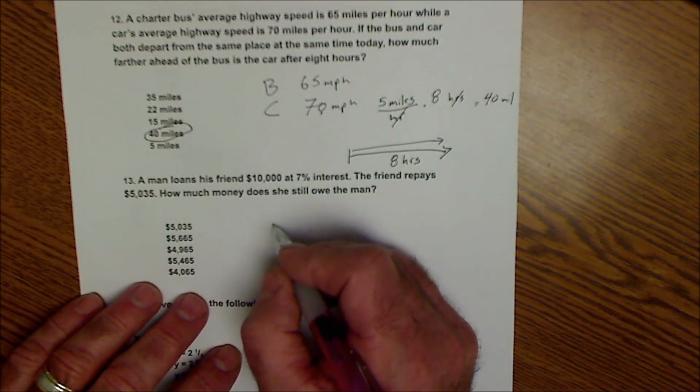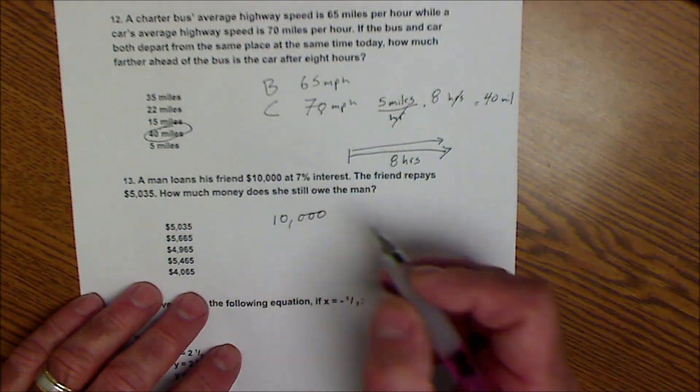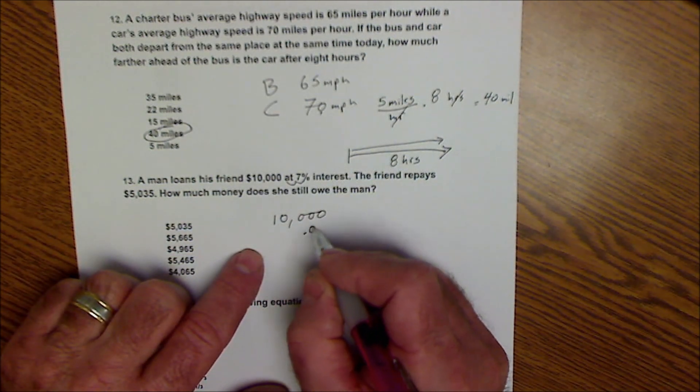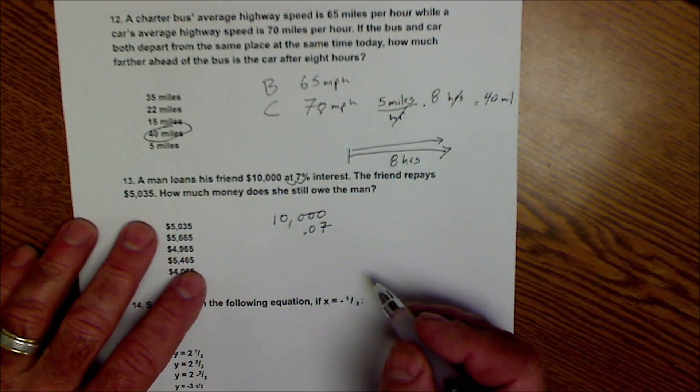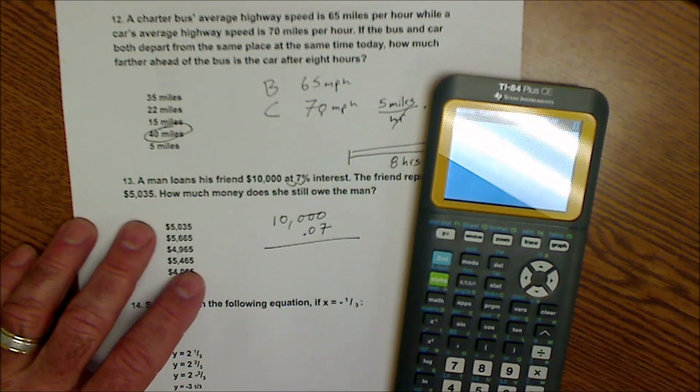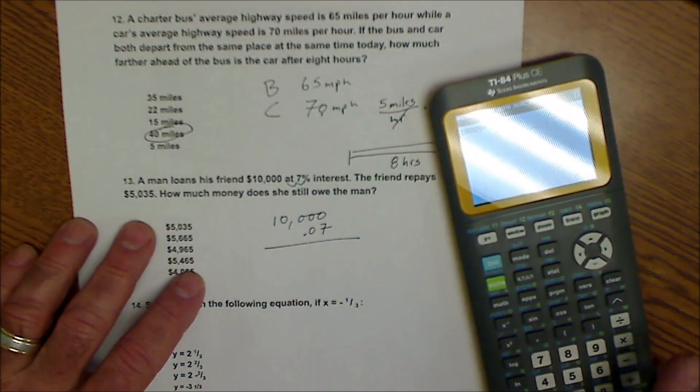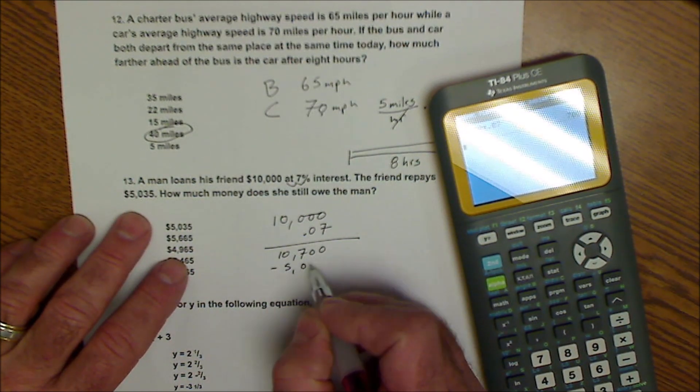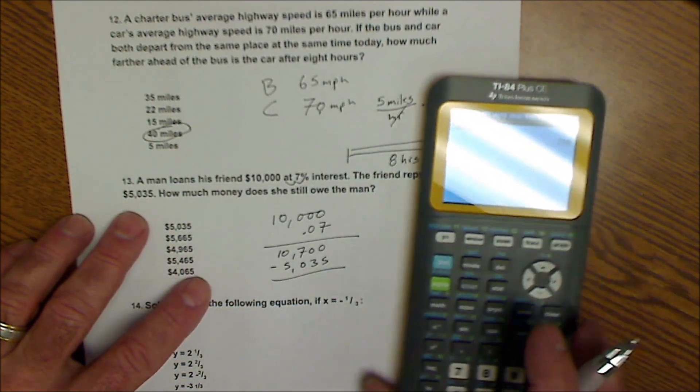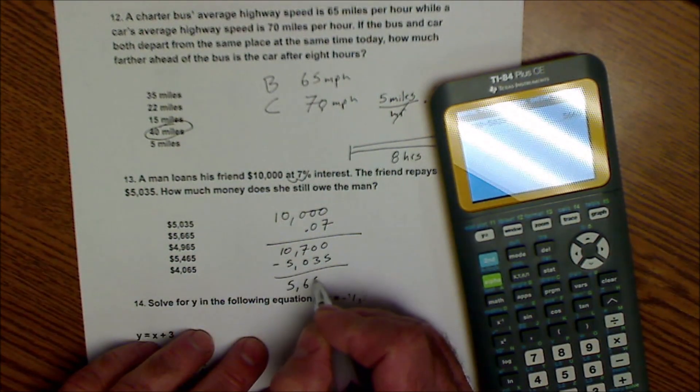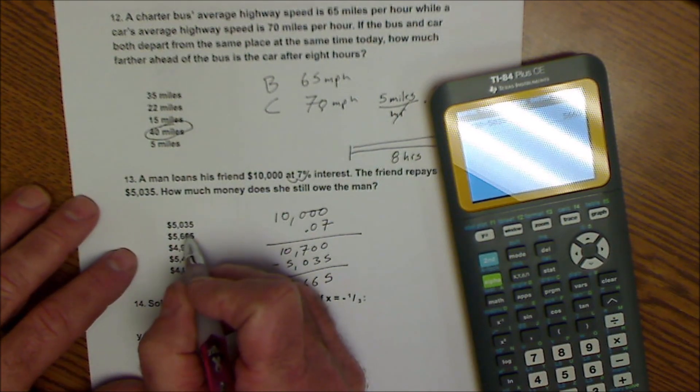A man loans his friend $10,000. He's not really a friend if he's loaning it to him at 7% interest. But $10,000 at 7% interest. Again, I move my decimal place over 1, 2. So 0.07. The friend repays $5,035. So I'm going to figure out what the interest is first. So $10,000 times 0.07 is $700. So the total cost is $10,700. He repays $5,035. How much does he still owe? So I'm going to take that $10,700 minus the repay amount and get $5,665 that he still owes. So number 13 is that right there.